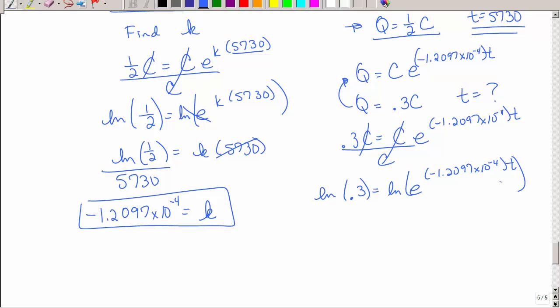We're going to take the natural log of both sides. So this is a very repetitive process, which is sometimes good. It doesn't make it difficult. We're going to divide both sides by that. And solve for T.